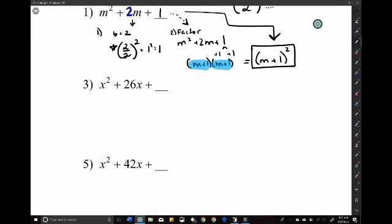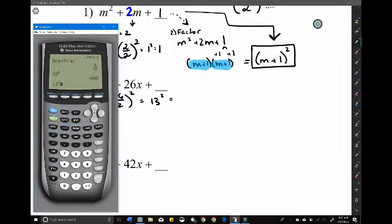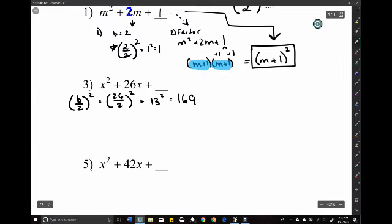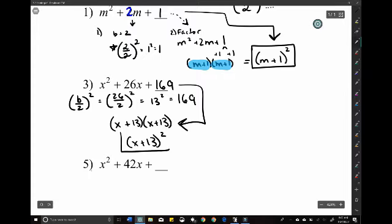Number 3. So, x squared plus 26x. Maybe pause the video, see if you can get it. I'm just going to do it on my own. B over 2 squared. And 169 should go in your C value. Which means we can rewrite this as x plus 13, x plus 13, or x plus 13 squared.